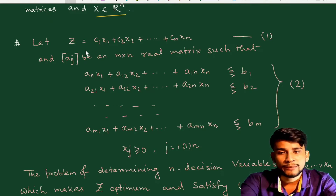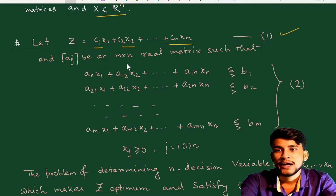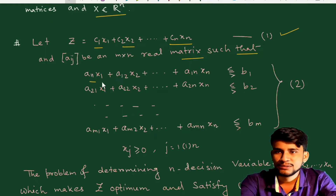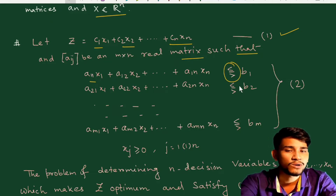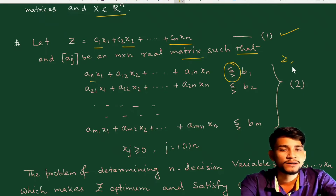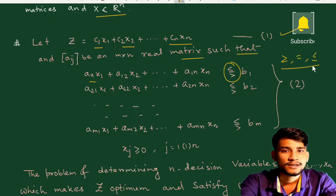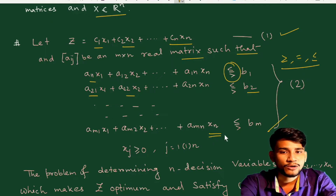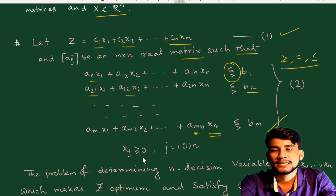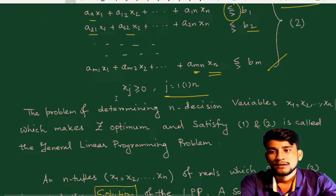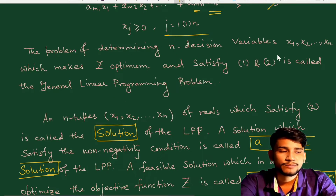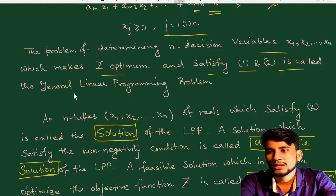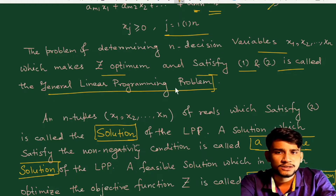The objective function is z = c₁x₁ + c₂x₂ + … + cₙxₙ, where c is a column vector. The general LPP has constraints of the form: aᵢ₁x₁ + aᵢ₂x₂ + … + aᵢₙxₙ ≤, =, or ≥ bᵢ for i = 1 to m, with xⱼ ≥ 0 for j = 1 to n. The problem of determining n decision variables x₁, x₂, …, xₙ which makes z optimum while satisfying these conditions is called the General Linear Programming Problem.